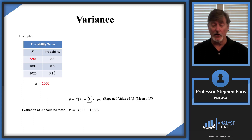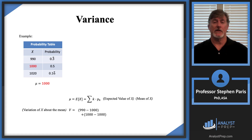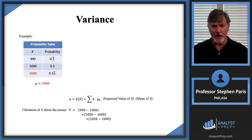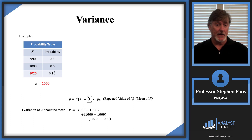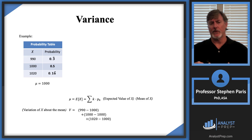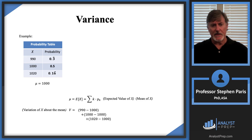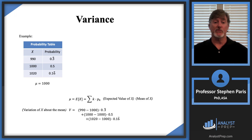I've got a 990, so I can look at how far 990 is from the mean, how far 1000 is from the mean, and how far 1020 is from the mean. Maybe I would think about looking at differences between the values in the support and the mean, and then even adding those up. But if I do something like that, I haven't taken into account the probabilities — the frequencies at which I'm expecting to see the observations.